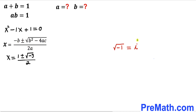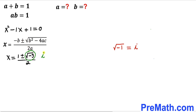Now let's recall this crucial fact: the square root of negative 1 is always equal to i, where i is our imaginary number. Therefore, the square root of negative 3 becomes i times the square root of 3. So we can write x equals 1 plus or minus i times the square root of 3, all over 2.